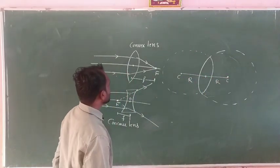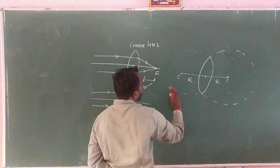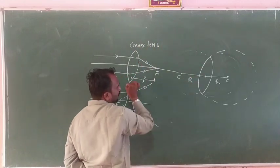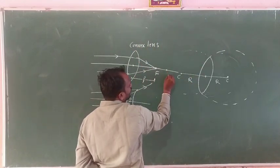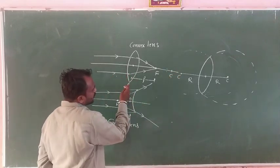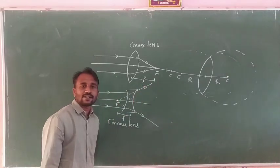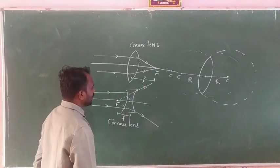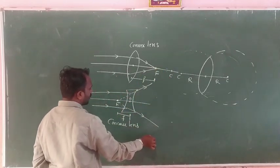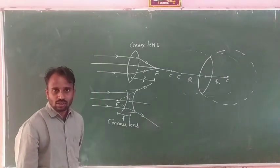If we consider a hollow sphere, the center of curvature is found, and the distance from the optic center to the center of curvature is the radius of curvature R. This applies to both surfaces of the lens — each has its own radius of curvature.